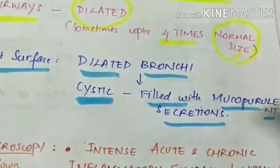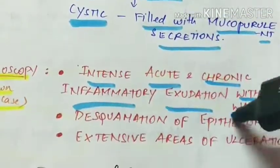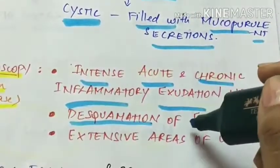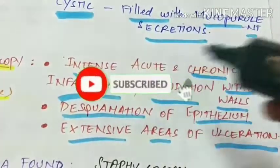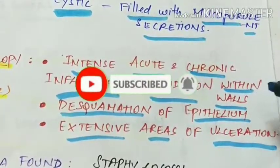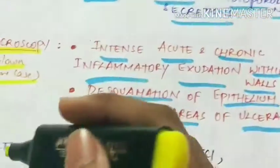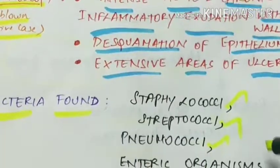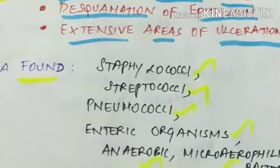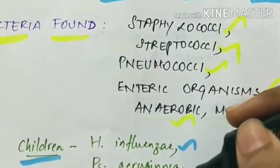Microscopically in a full-blown active case of bronchiectasis, there is intense acute and chronic inflammatory exudation within the walls of bronchi and bronchioles, with desquamation of epithelium and extensive areas of ulceration. Bacteria found include staphylococci, streptococci, pneumococci, enteric organisms, anaerobic and microaerophilic bacteria, and in children Haemophilus influenzae and Pseudomonas aeruginosa.